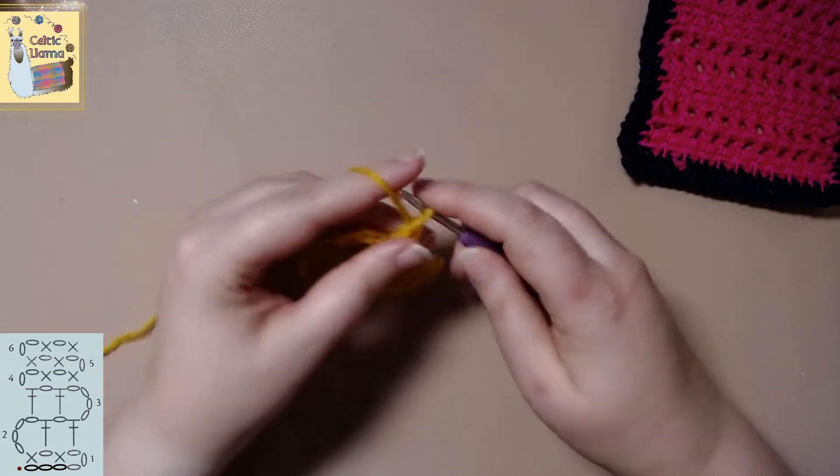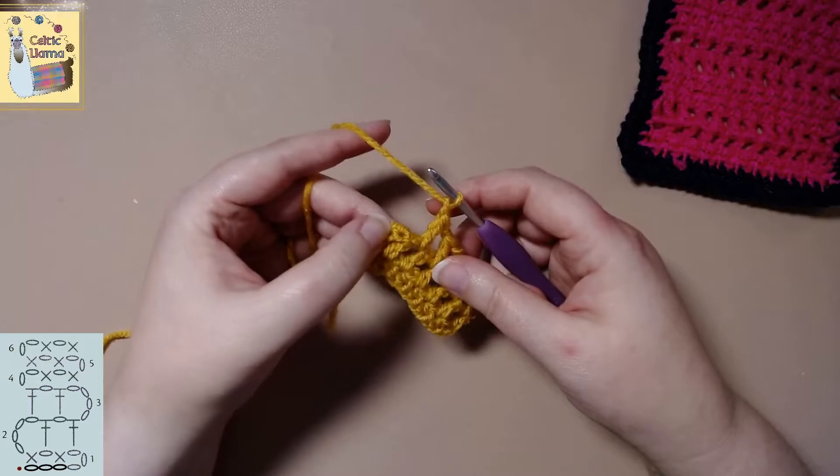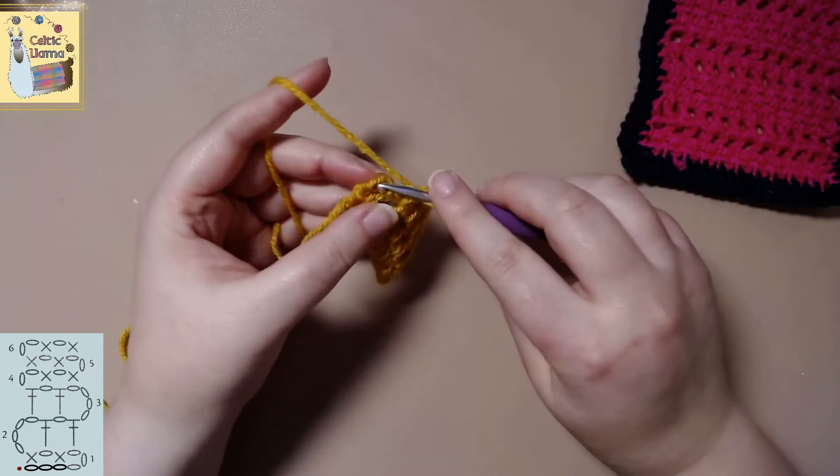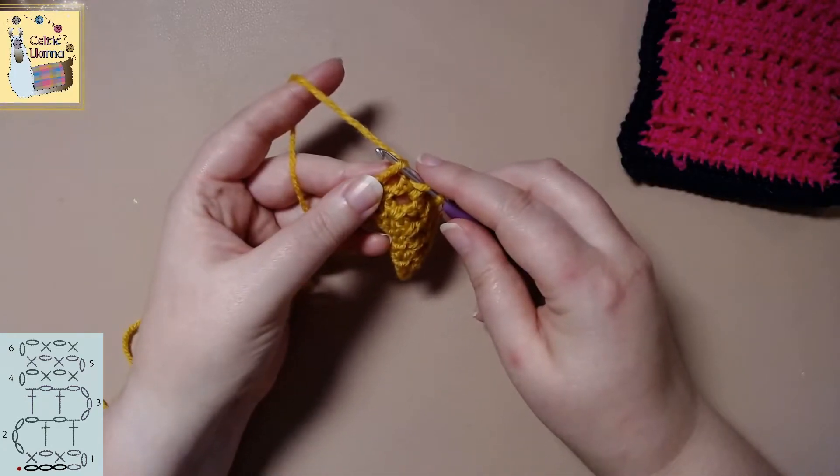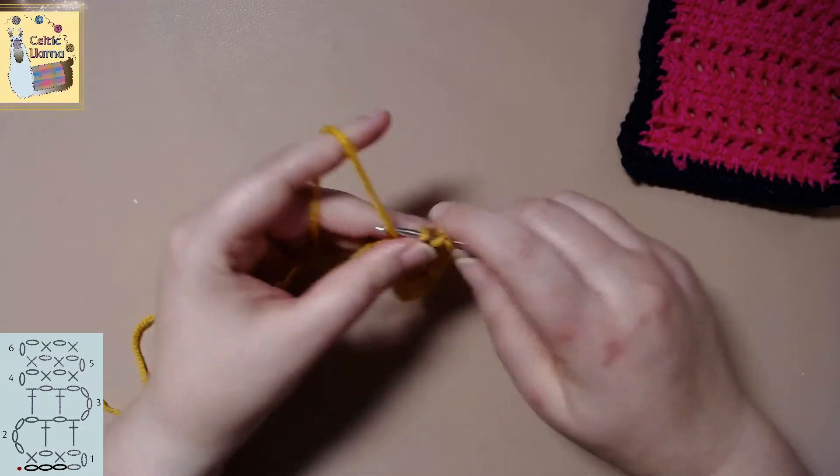All right. And just like we did with row two for our last double crochet, I'm going to do it into the side chain. And again, this is just to give it a nice smoother side.